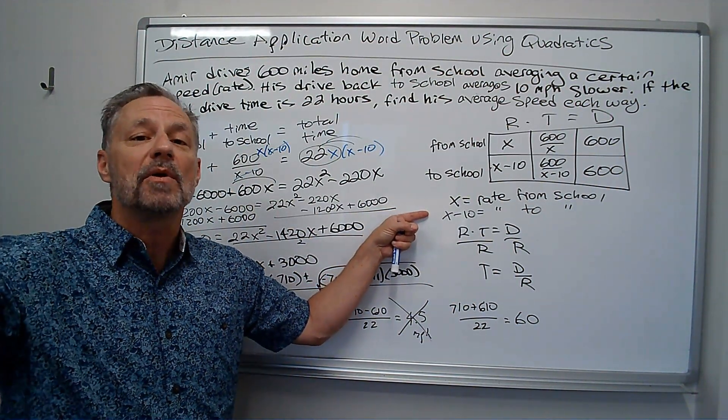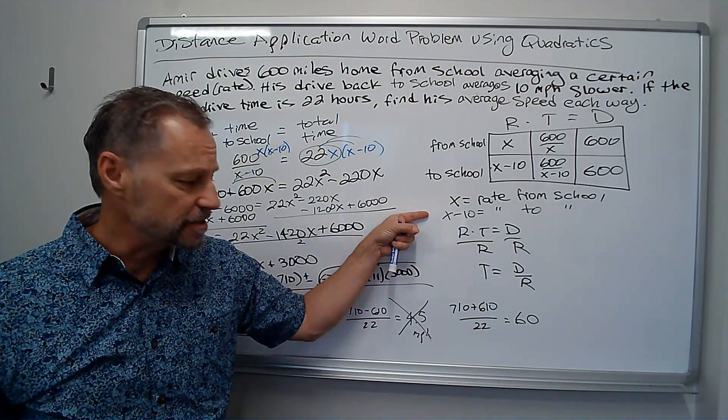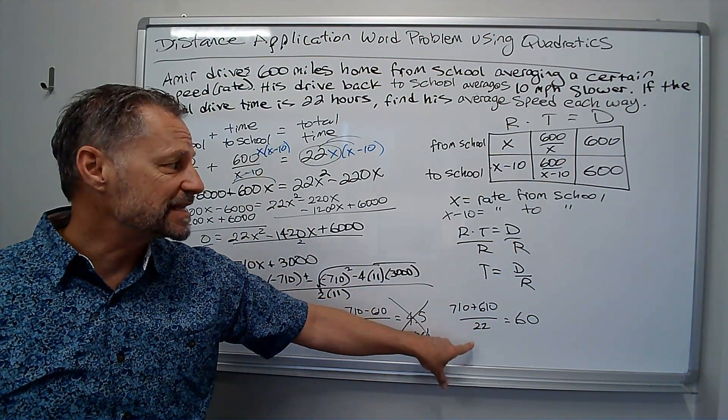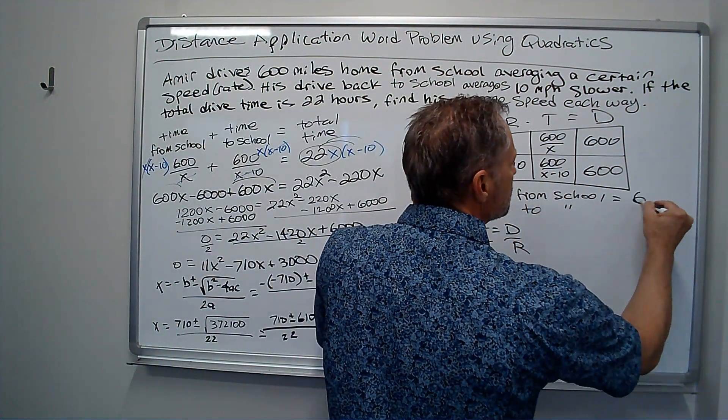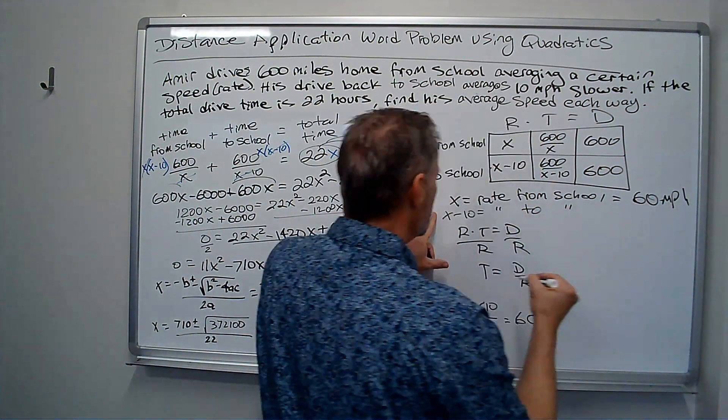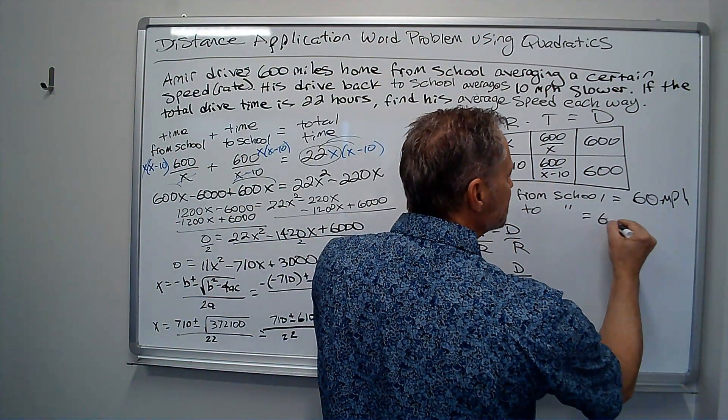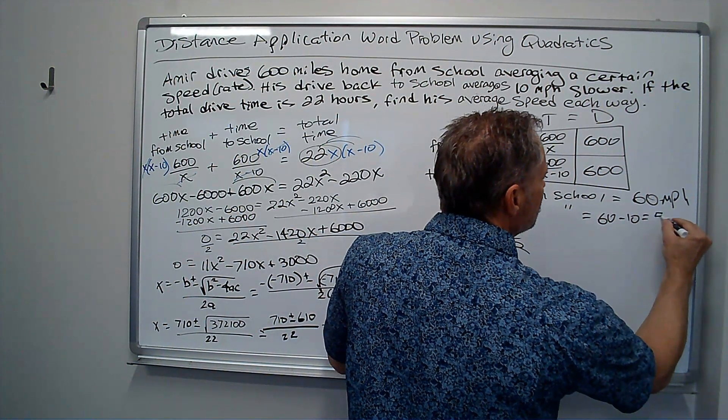Because it makes me have a negative rate. Obviously, I'm not going to get to where I'm going if I'm driving backwards the opposite direction. So, 60 is the only answer that really works. So, X is 60. And X minus 10, 60 minus 10, 50 miles per hour.